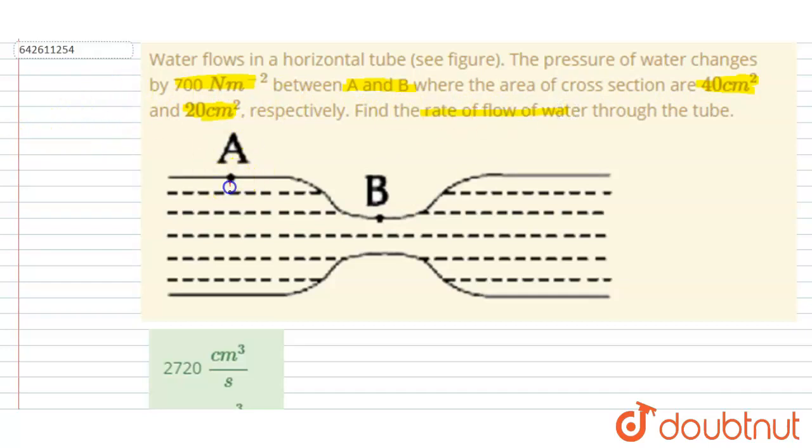Let's say this is the cross section 1 and through this cross section the velocity of the fluid passing is V1 and the area of cross section is A1 and here the cross section is V2 and area of cross section is A2.